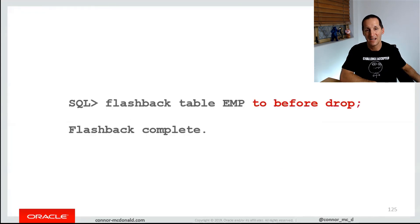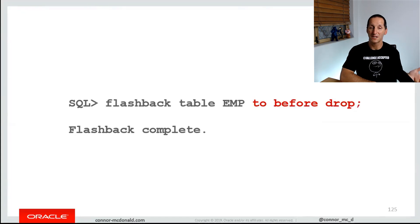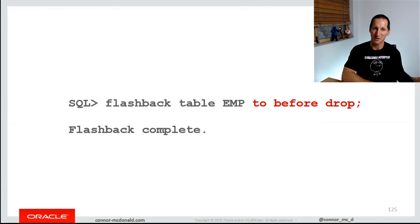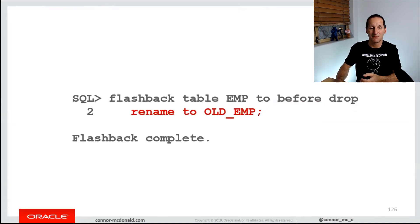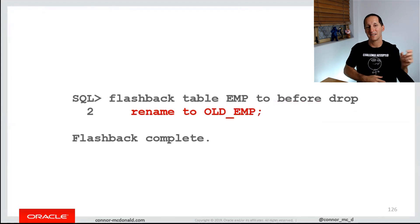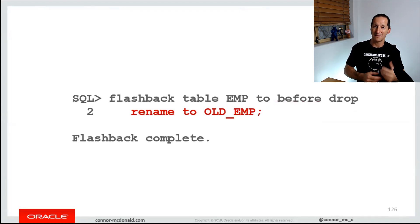How do you get it back? You simply do flashback table employee to before drop. It will go look in the recycle bin, find the original name of employee, and rename that BIN$ table back to the employee table. If there is a new employee table already in place, you can do flashback table employee to before drop, but while bringing it back, just rename it to old_employee — so as to not overwrite a new version of the employee table.